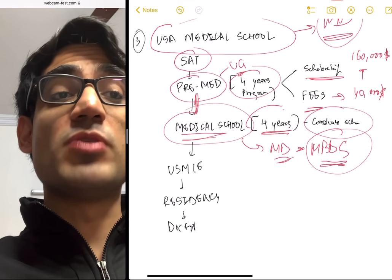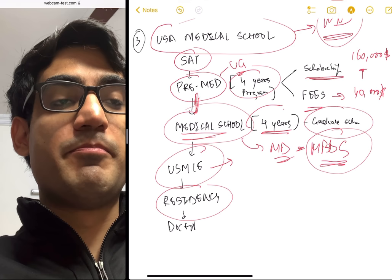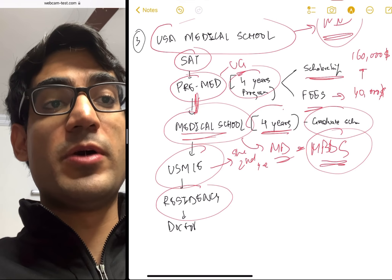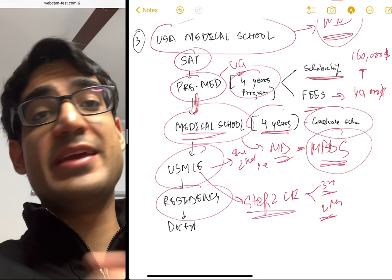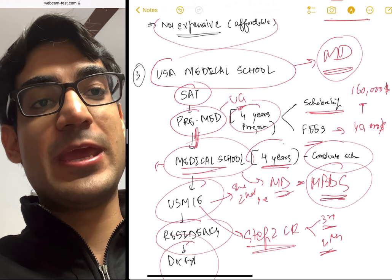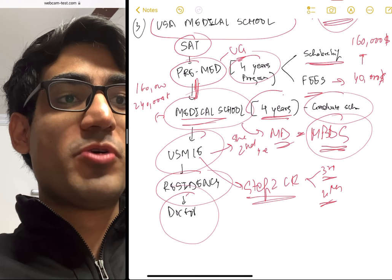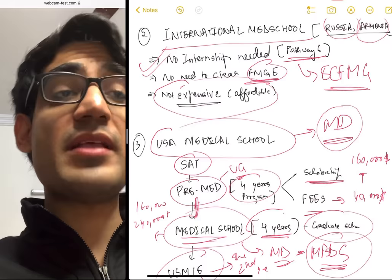After pre-med you enter medical school in the US, which is a 4-year graduate program and grants the MD degree. Medical school costs about $40,000–$60,000 per year, totaling another $160,000–$240,000. The total cost of this pathway comes to roughly $320,000–$500,000. During medical school, US students give USMLE Step 1 around their second year and Step 2 CK in their third or fourth year. Once they match into residency, they become a doctor. The visa required for US medical schools is the F1 student visa.